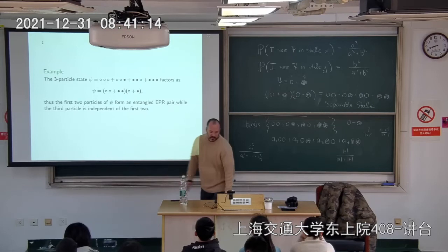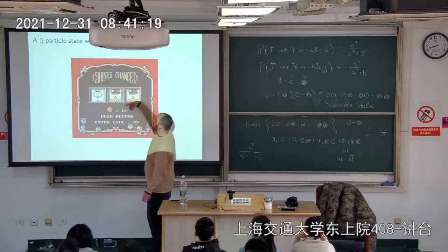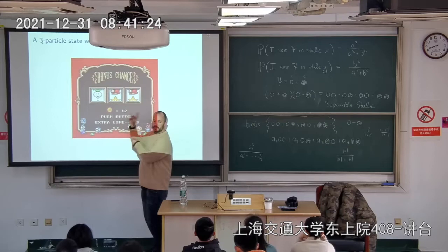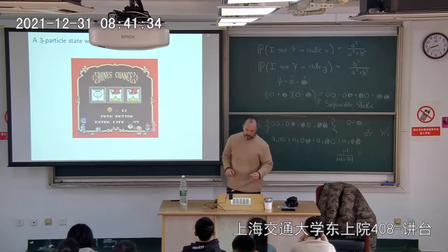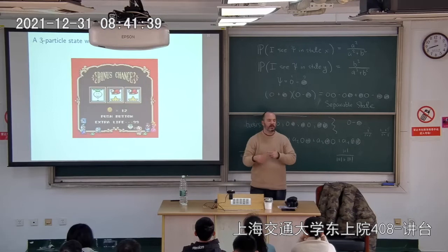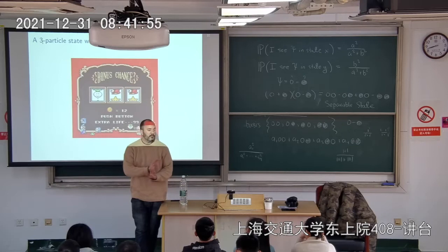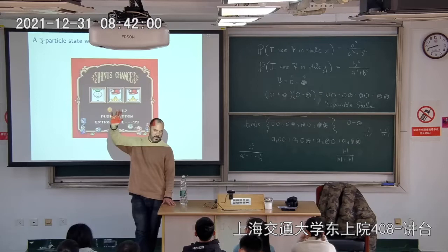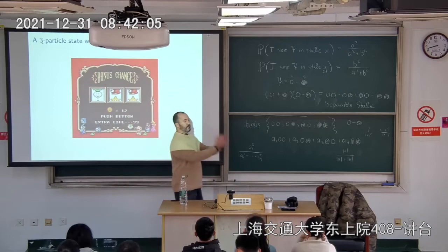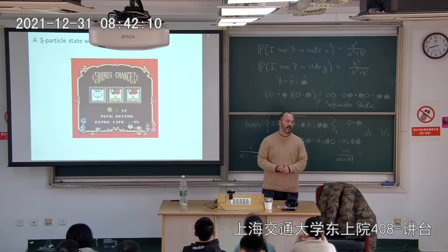The third particle is also spinning, but not together with the other two, so I can measure them independently of each other. Nobody really knows what's going on in the quantum realm — different people have different interpretations. The mathematical model for quantum states is what fits what we observe in the laboratory; it's the best theory anyone has so far to model fundamental particles.